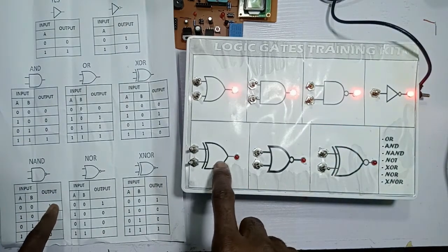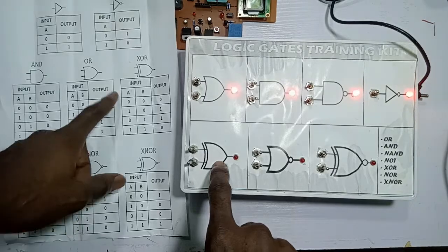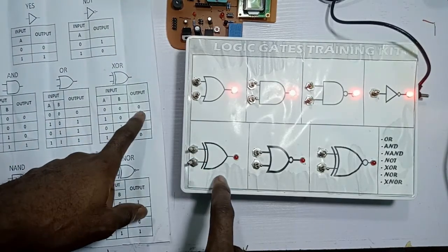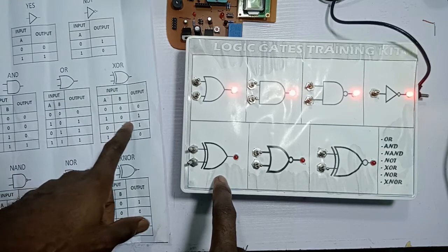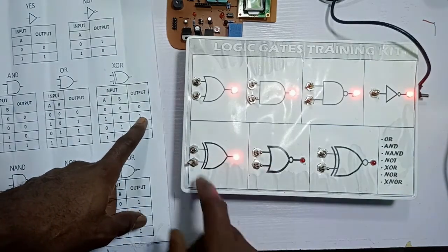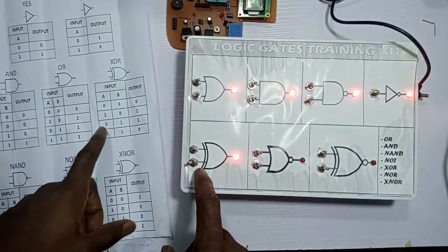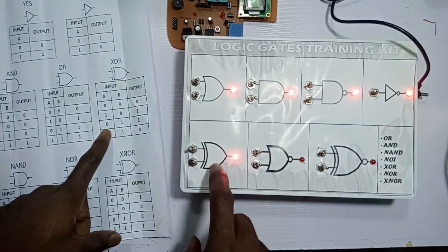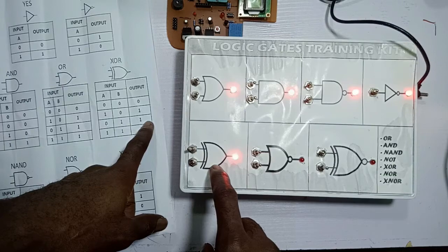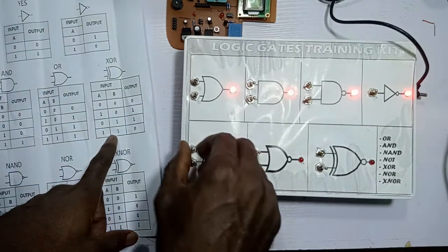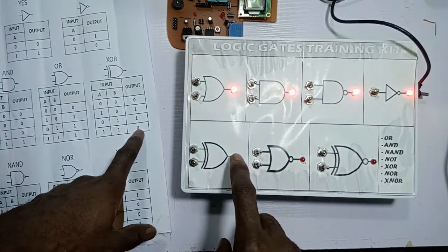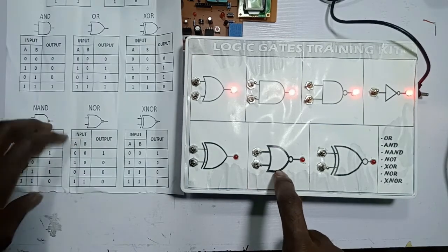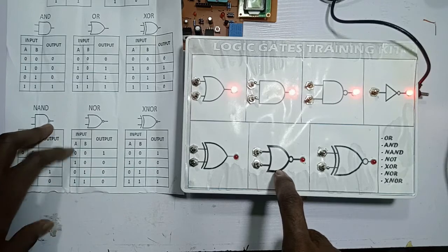For XOR, it's now zero zero, which gives zero. I have one zero — the output is one. Then zero one — that gives one. If I have one one, that gives zero.